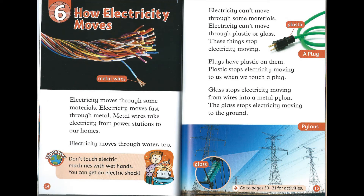Chapter 6: How electricity moves. Electricity moves through some materials. Electricity moves fast through metal. Metal wires take electricity from power stations to our homes. Electricity moves through water, too.